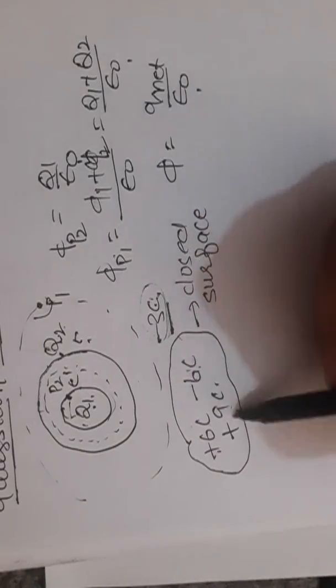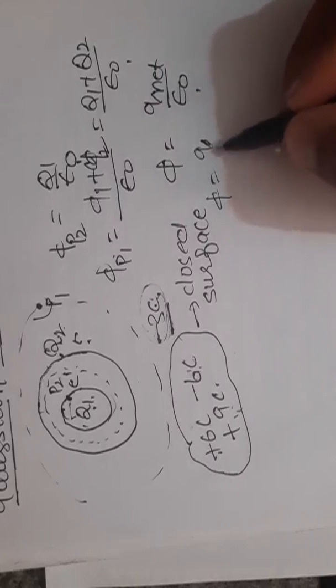Now, total charge is net charge. Add, 6 minus 6, 0. So answer will be 9 divided by epsilon_0.